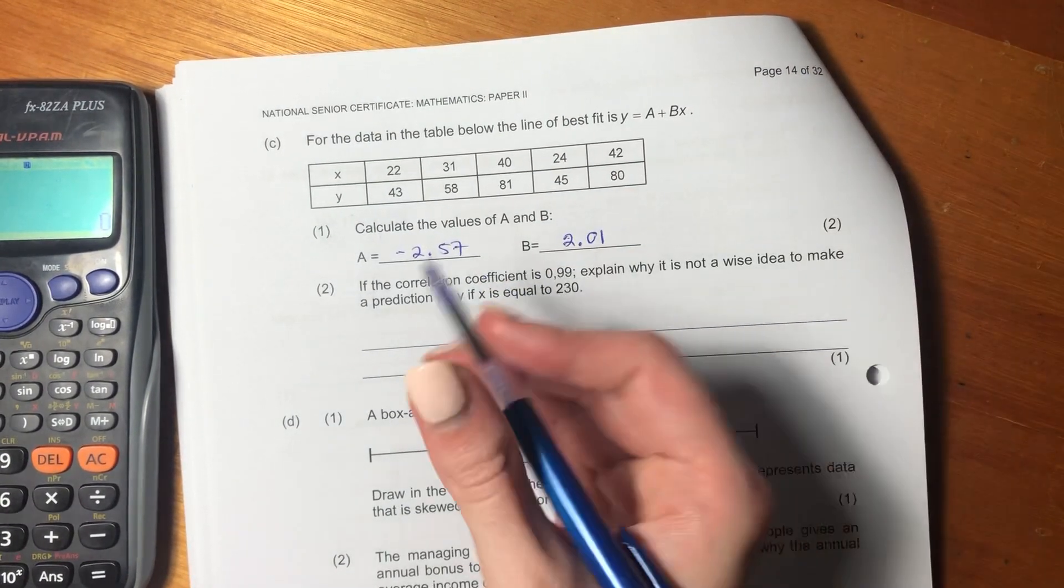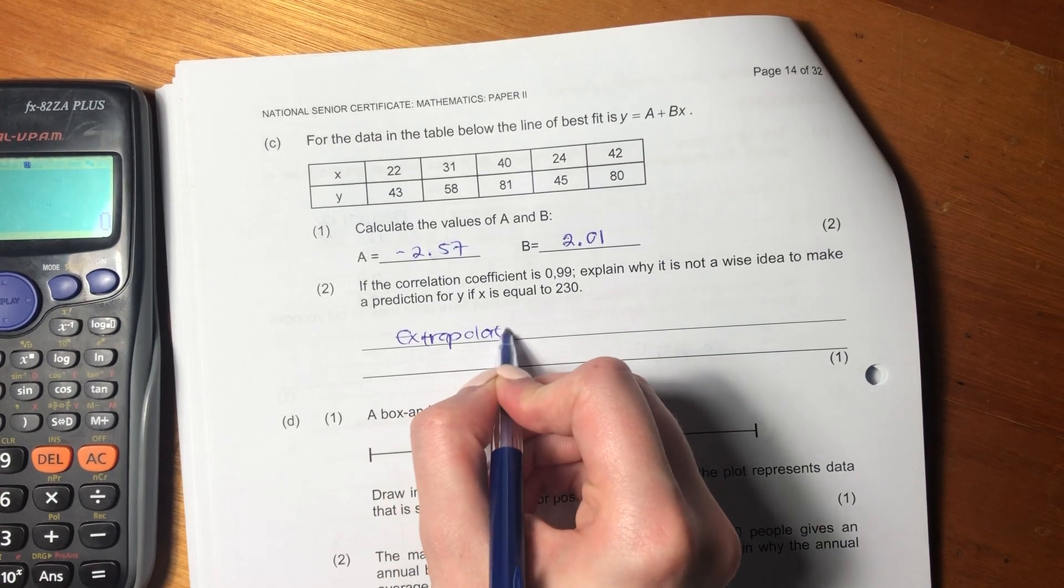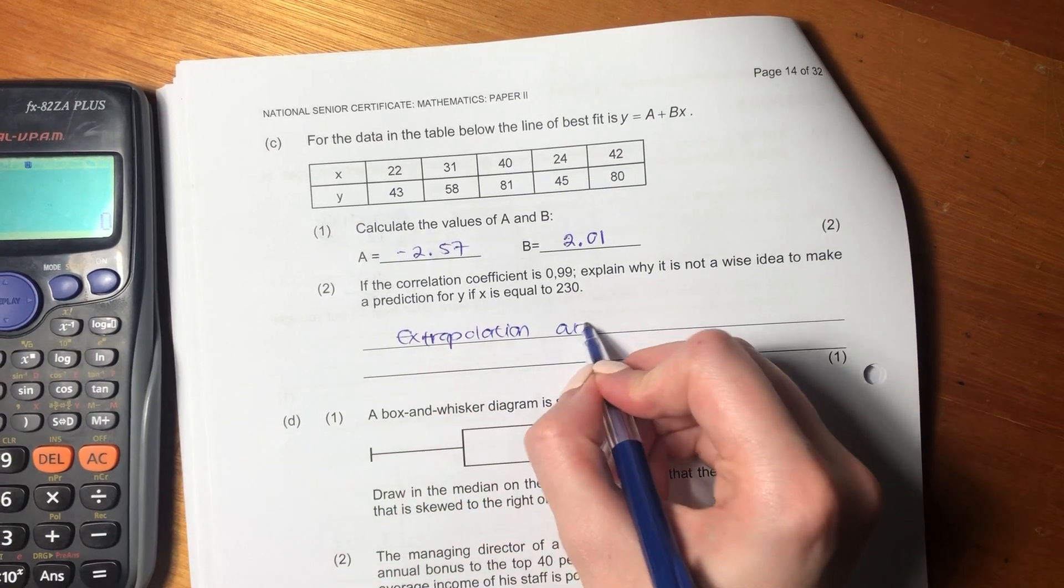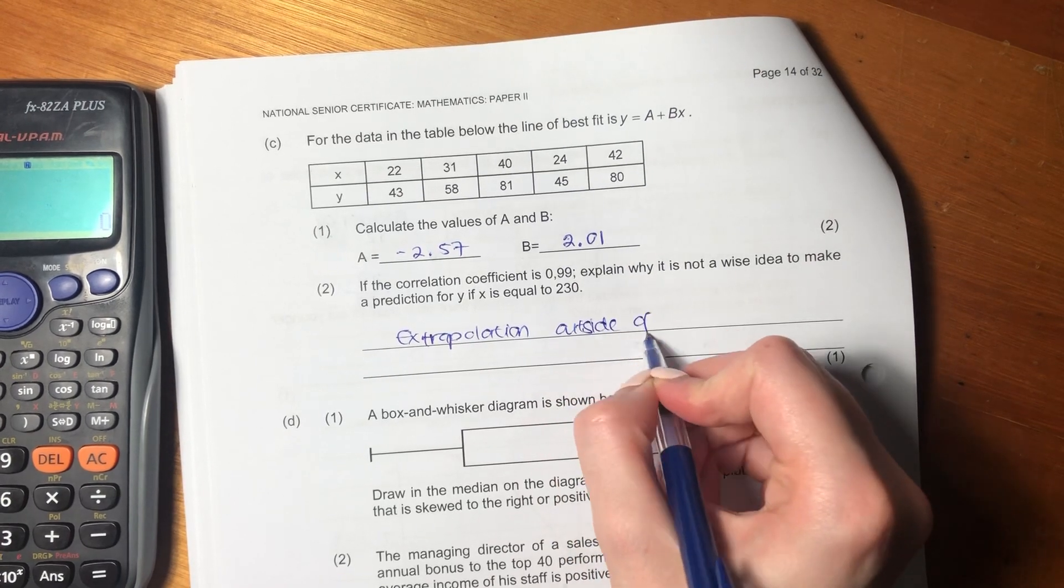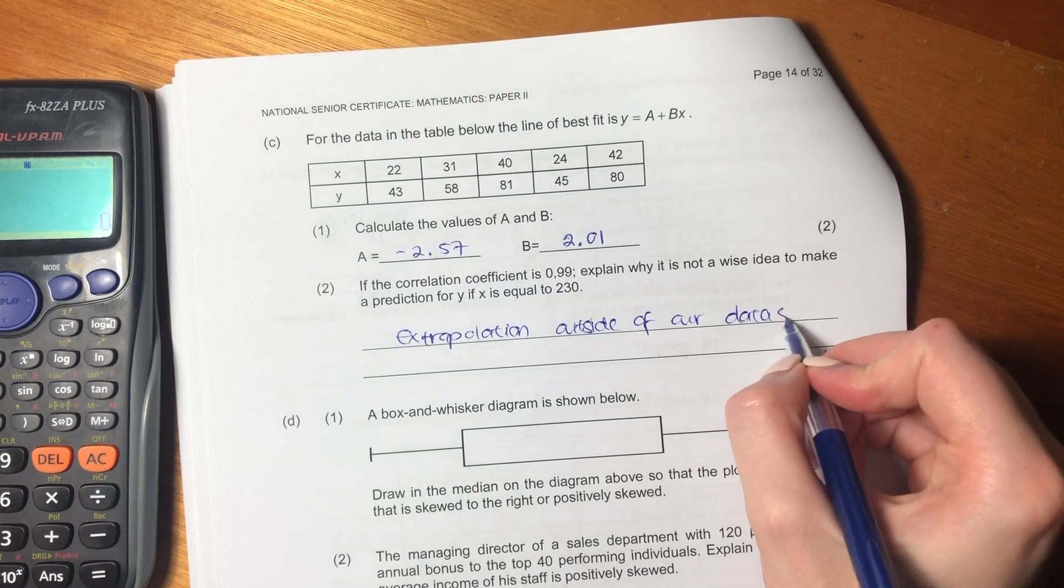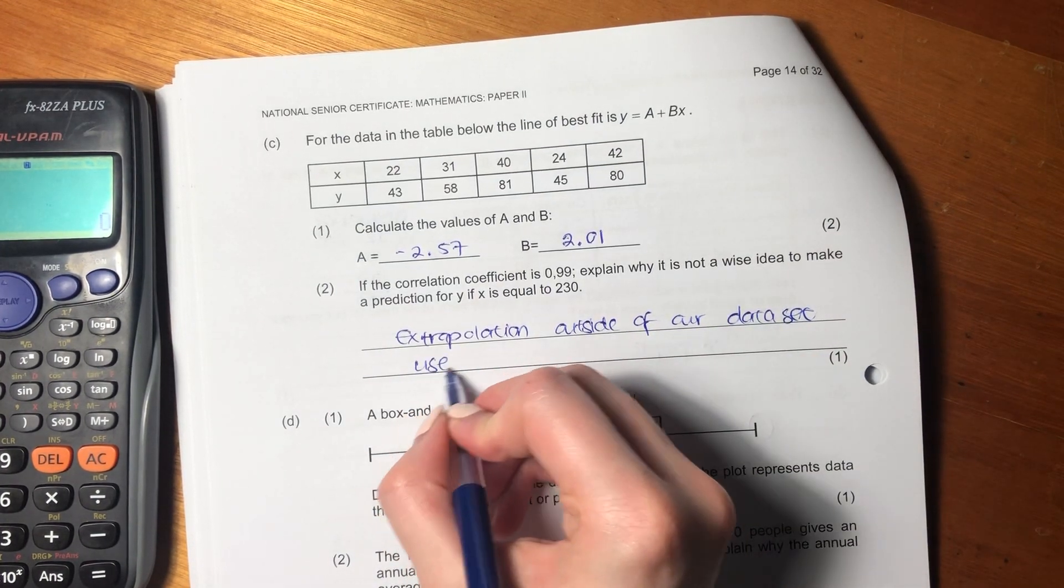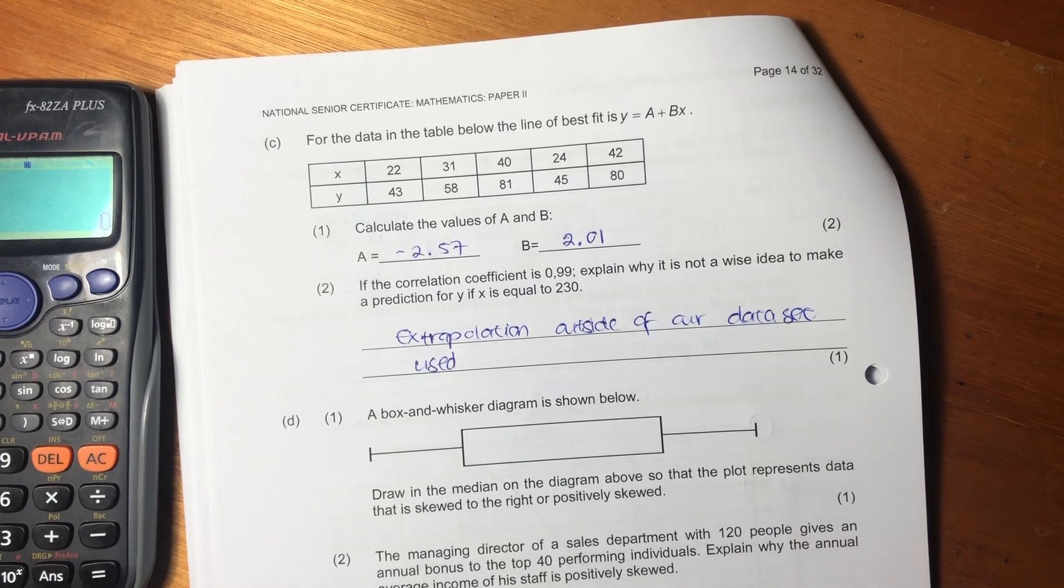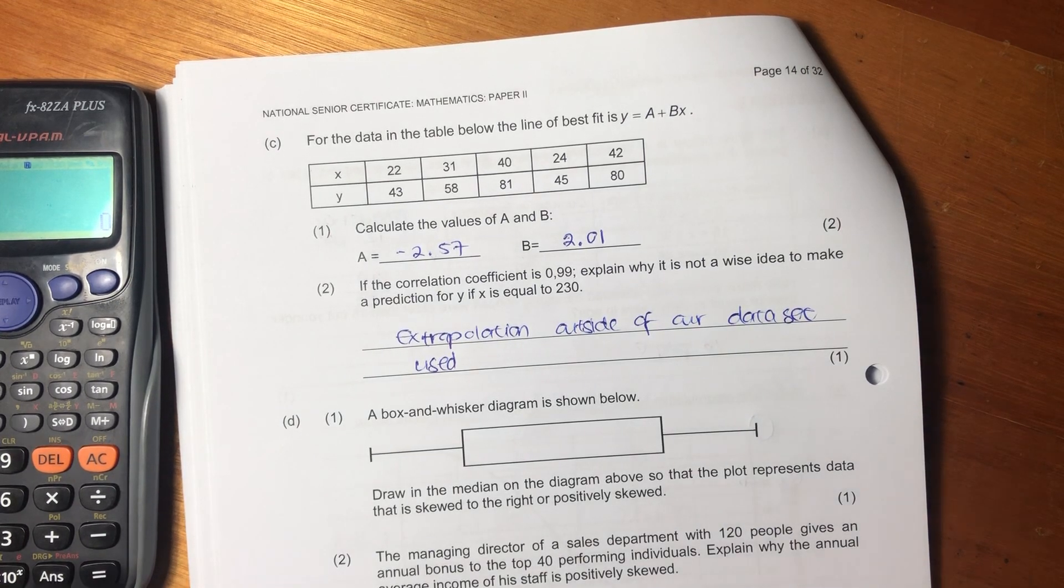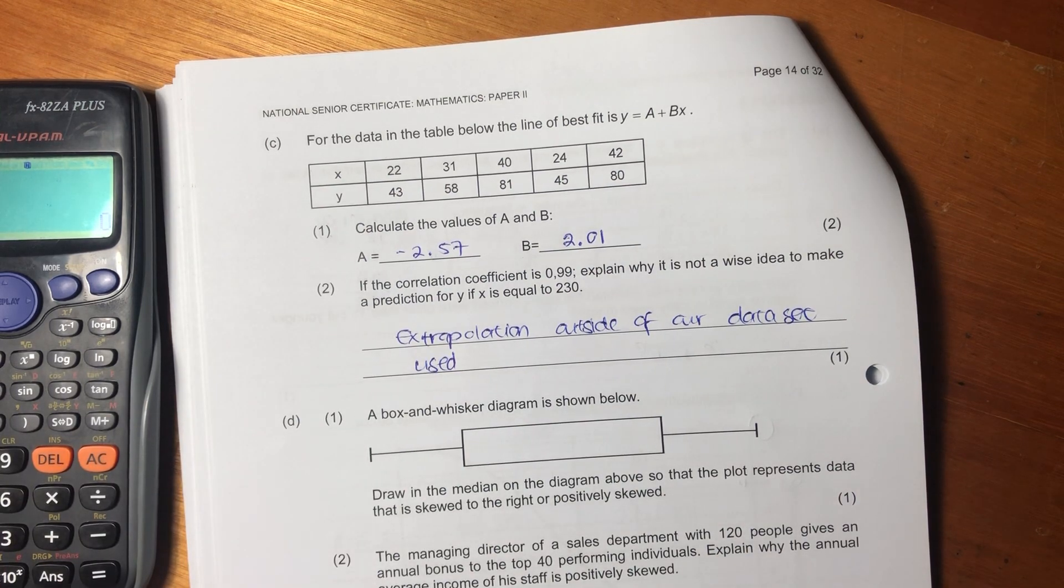So we're going to say it would be extrapolation, outside of our data set used. And that is always going to be a little bit variable or a little bit untrustworthy.